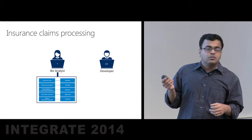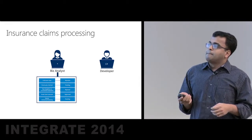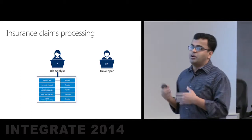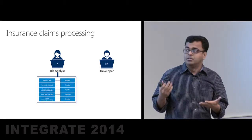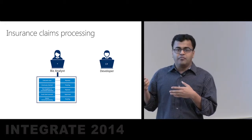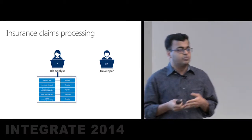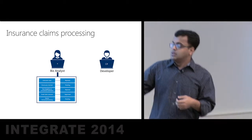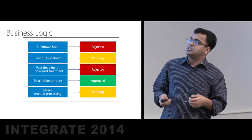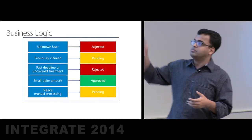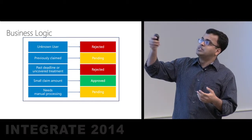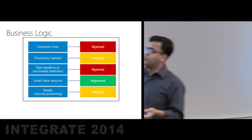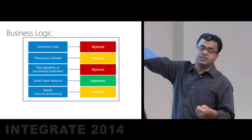Let's take a closer look at the claims processing unit. You might have two distinct personas in your company: the business analyst and the developer. The business analyst is the one who defines your business logic, and that logic can be really, really complex. Taking a closer look at the business logic, you may have a set of rules which determine whether you want to reject or accept the claim.